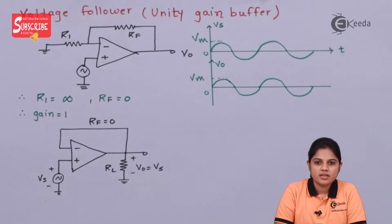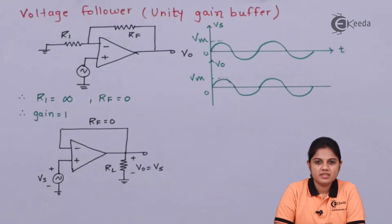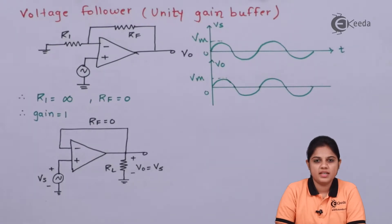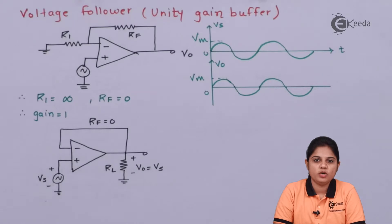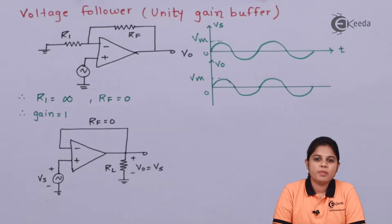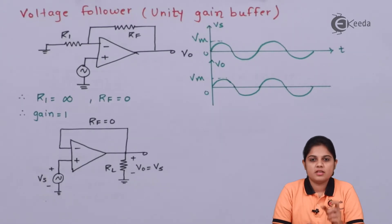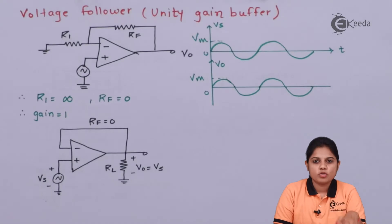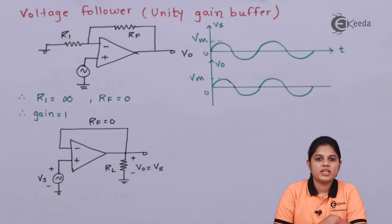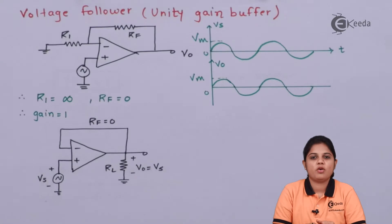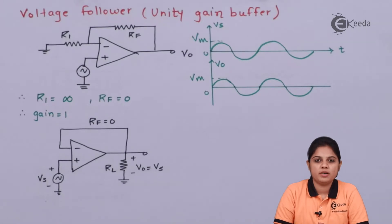The name itself is explanatory: voltage follower means it follows the input voltage as it is. So the output voltage must be equal to the input voltage, and the feedback resistance decides the closed-loop voltage gain. The closed-loop voltage gain must be equal to 1, so that it can be called a unity gain buffer.